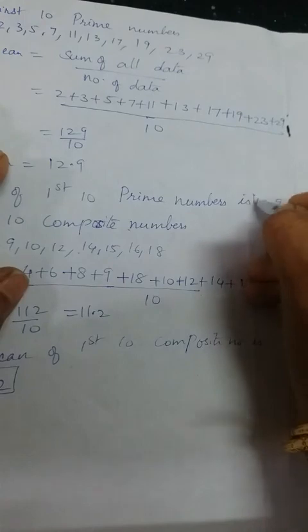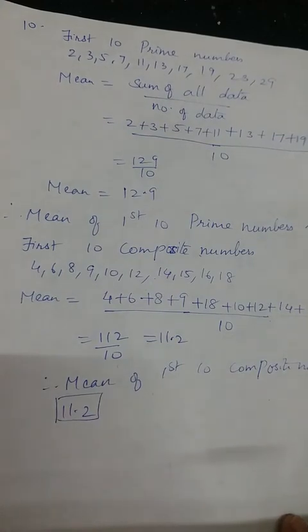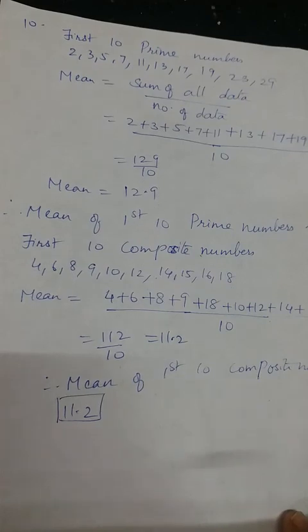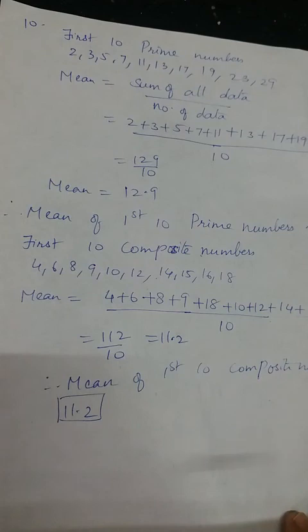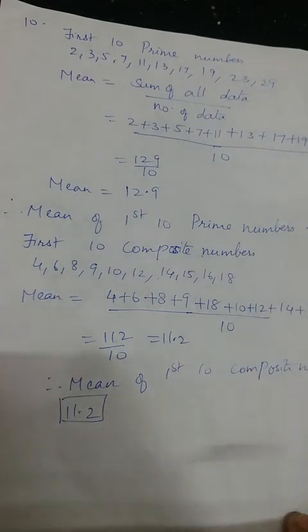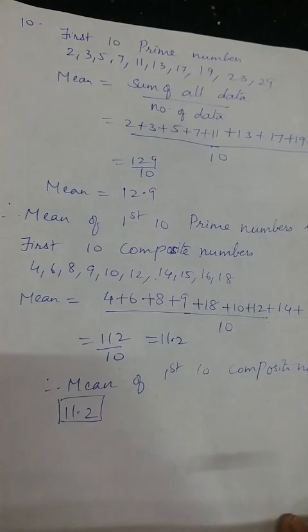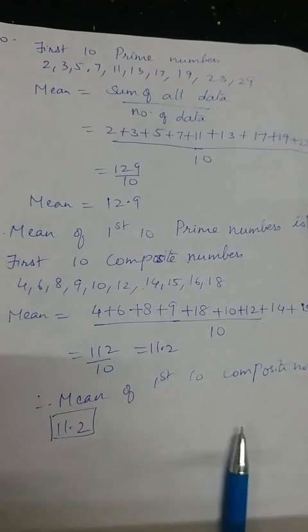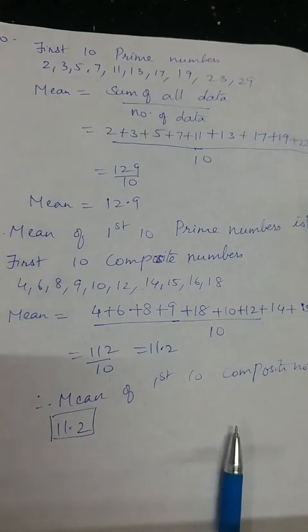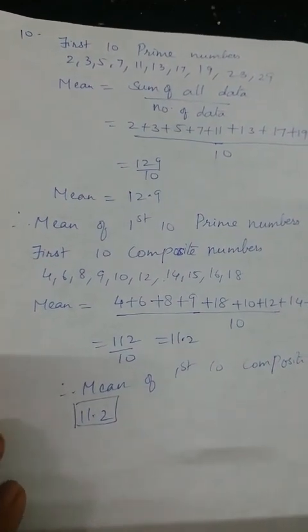This completes your exercise on data handling. Please practice all these sums — mean, median, and mode are the three concepts in this chapter. Mean means sum of all observations by number of observations. Median means the middle value from the given observations. Mode means the value which occurs maximum number of times. The flowchart topic will be done in your computer class.